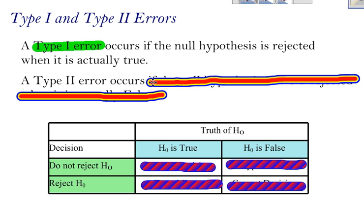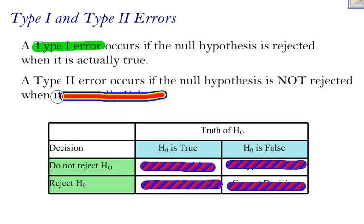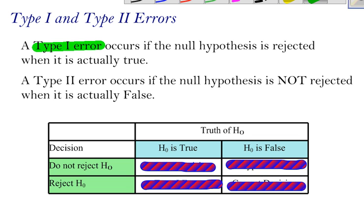What is a type 2 error? It deals with the null hypothesis. A type 2 error occurs if the null hypothesis is not rejected when it is actually false. So you see, I should have rejected it because it's false, but I did not reject it, and that results in a type 2 error.